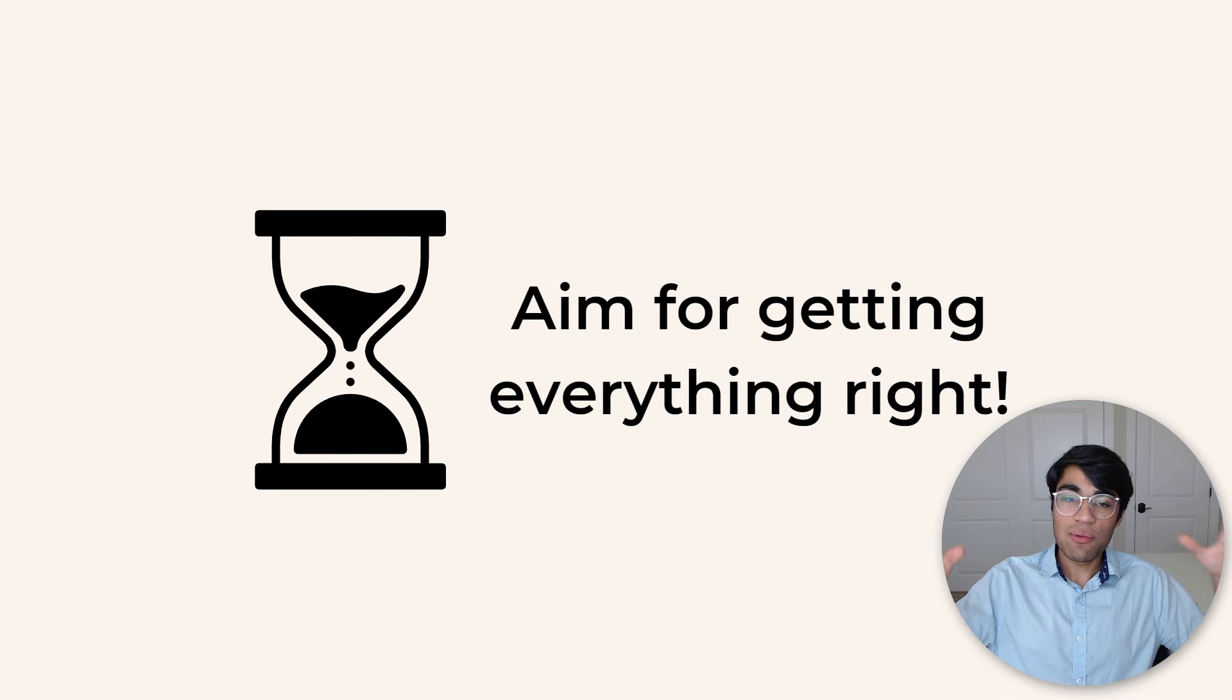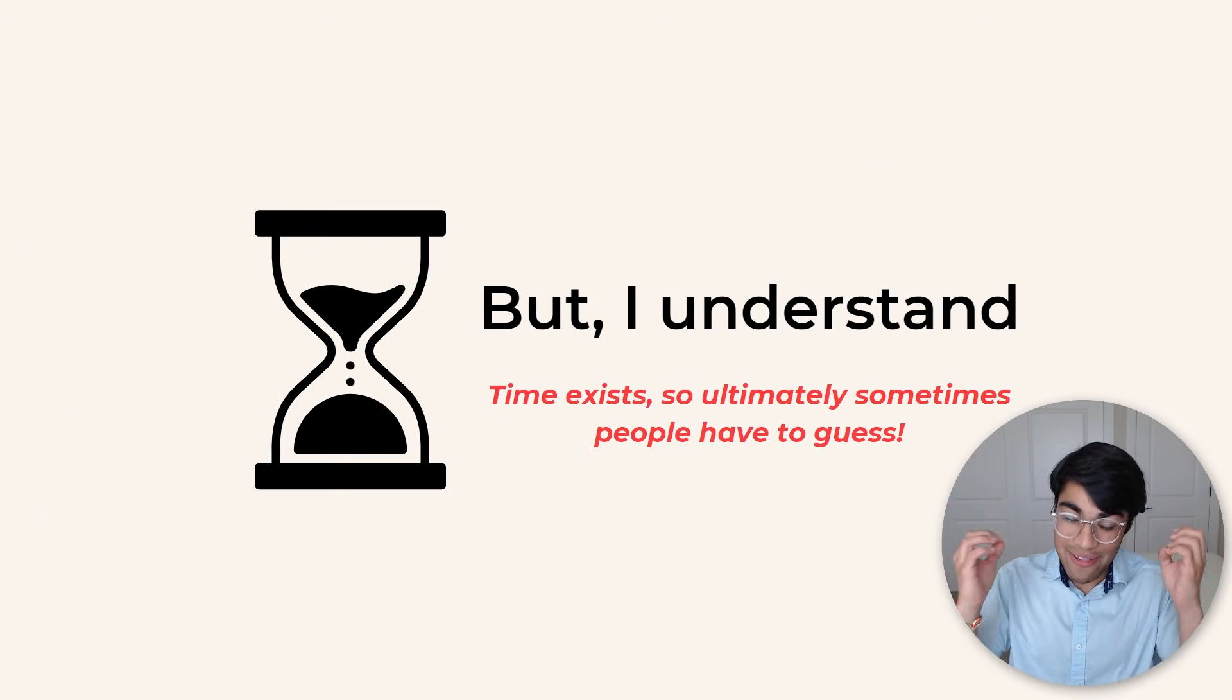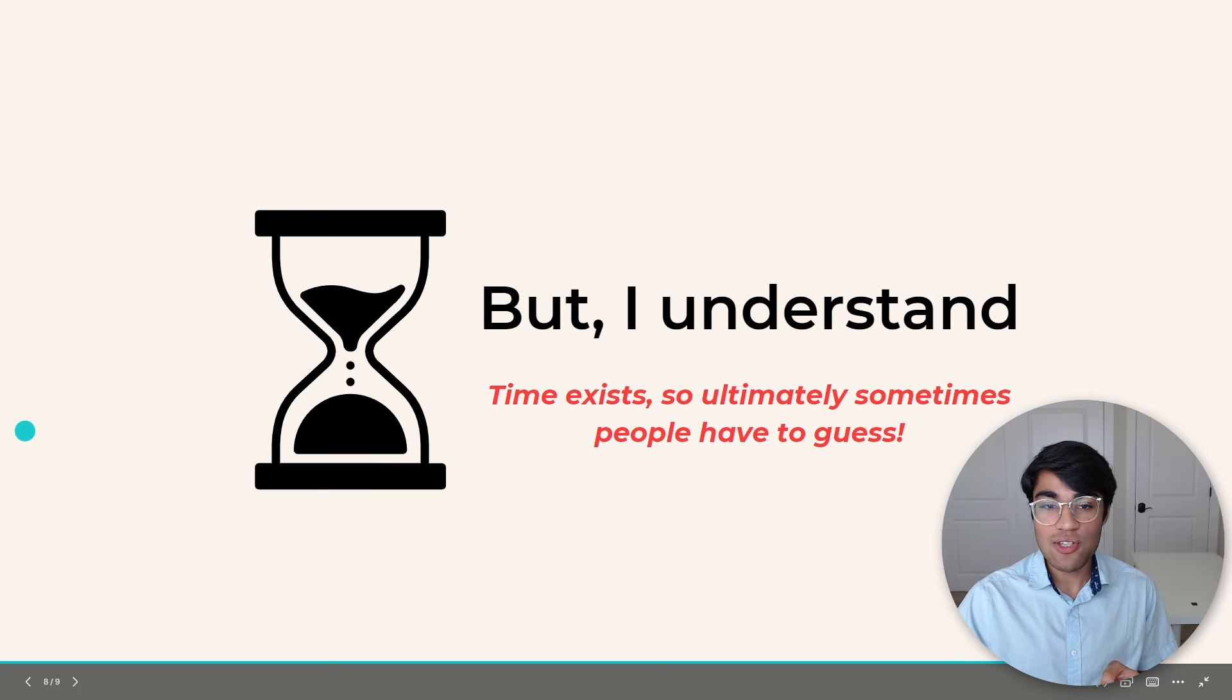Given all of this, I do want to say that you should aim for getting everything right if you can, but of course time is a factor—time exists—so ultimately sometimes people have to guess, and that's why you can use the ultimate ACT guessing strategy on your math section. Good luck, and watch the next video on the screen which teaches you how you can get a 36 on your ACT test.